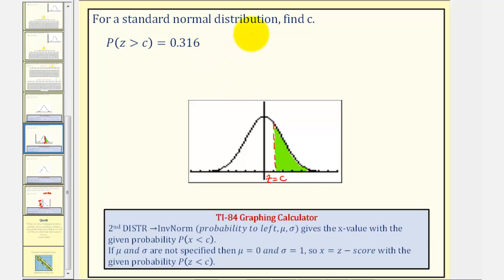But when using the TI-84 graphing calculator, using the inverse norm command, we must enter the probability to the left, not to the right. So if this area is 0.316,